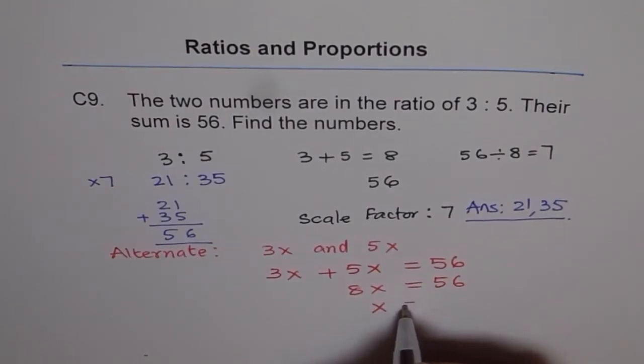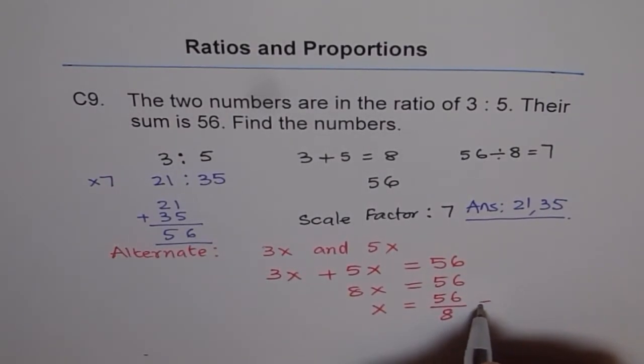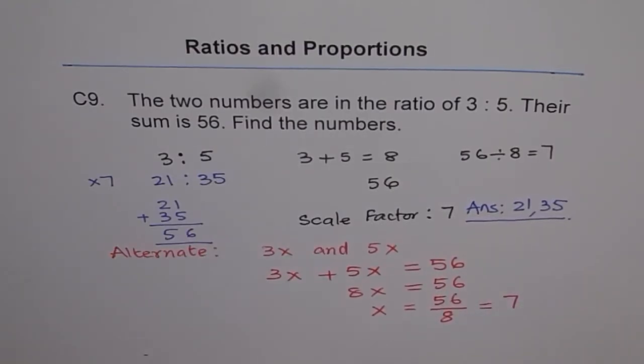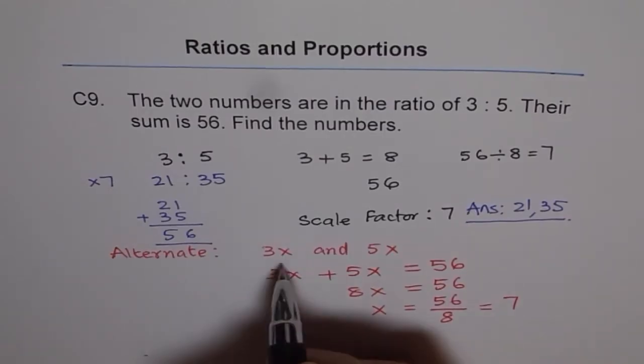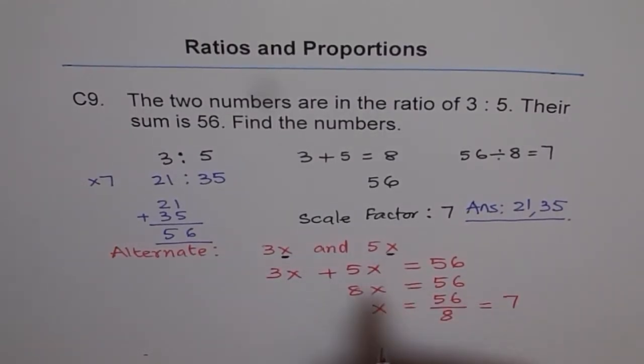You get x equals to 56 divide by 8, which is 7. So we get x as 7. Now we know x. Earlier we didn't know this x, which we call scale factor. Now we can write down the numbers.